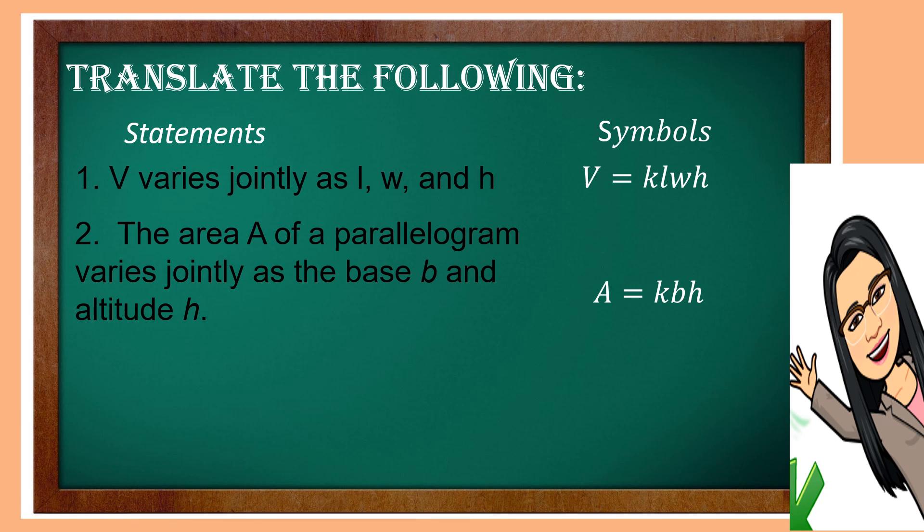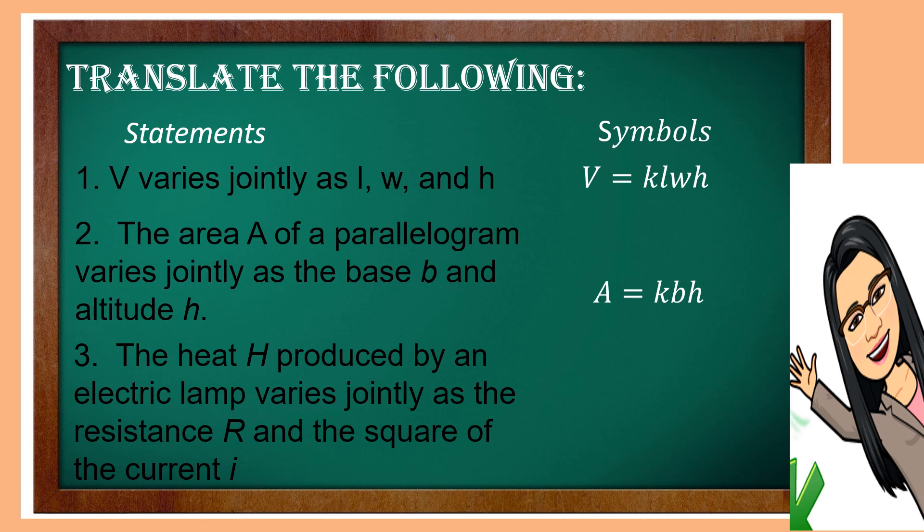How about this? The heat produced by an electric lamp varies jointly as the resistance and the square of the current. The variation symbol will be H is equal to K times R times I squared.